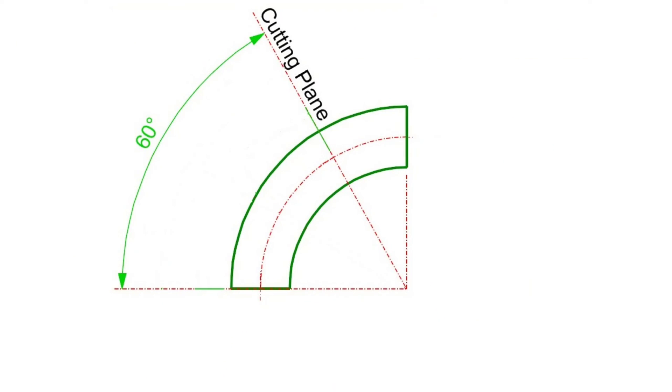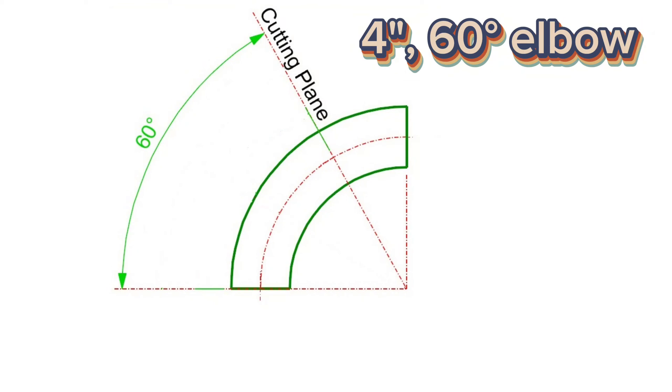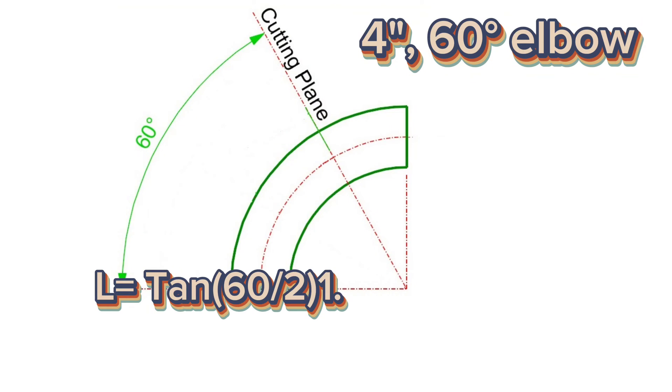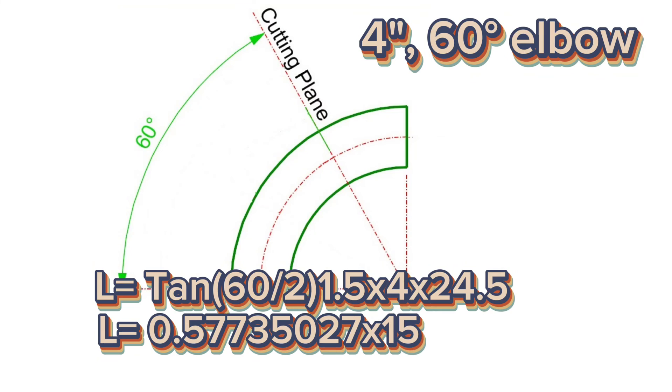For example, calculate elbow center to end dimension for 4 inch nominal pipe diameter elbow at 60 degree angle, cut from 90 degree long radius elbow. Length of 60 degree elbow equals tangent, 60 halves, times 1.5 times 4 by 25.4. Length is equal to 0.57735027 times 152. Length equals 87.757, that is 88 millimeters height.